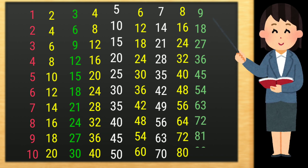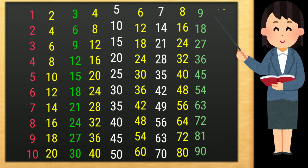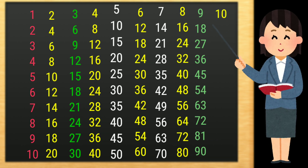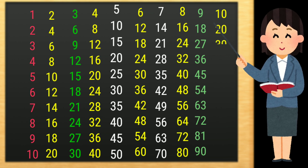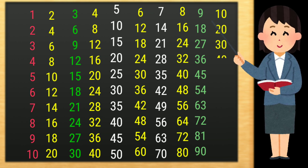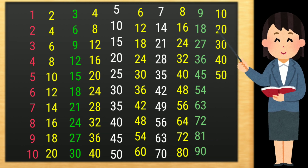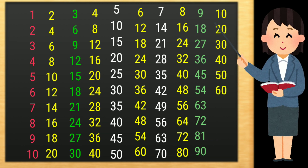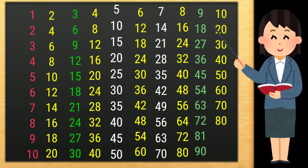9 10s are 90. 10 1s are 10, 10 2s are 20, 10 3s are 30, 10 4s are 40, 10 5s are 50, 10 6s are 60, 10 7s are 70, 10 8s are 80, 10 9s are 90.